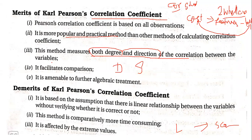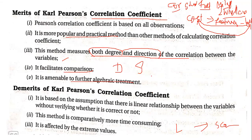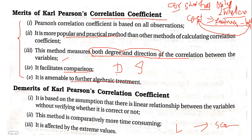Fourth merit: it helps do lot of comparison, for example mileage of two-wheelers. Fifth merit: it is amenable to further algebraic treatment — taking this r value you can still go on and do more calculations, which we will do in the next concept.